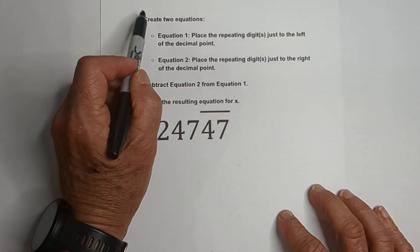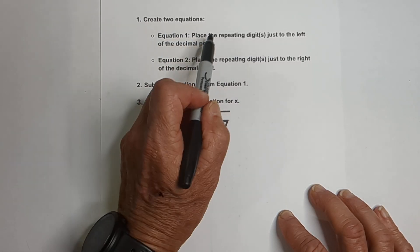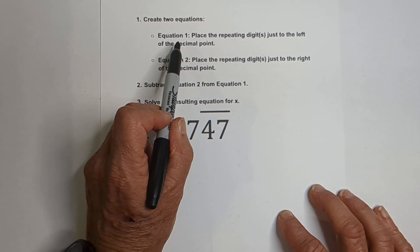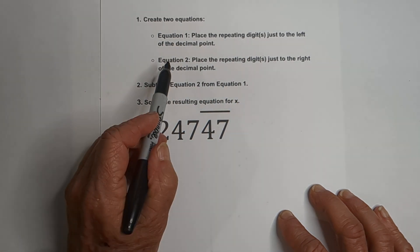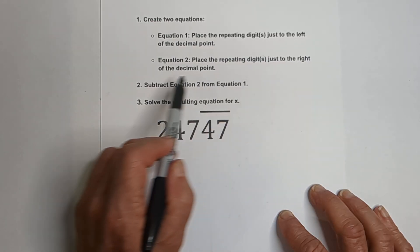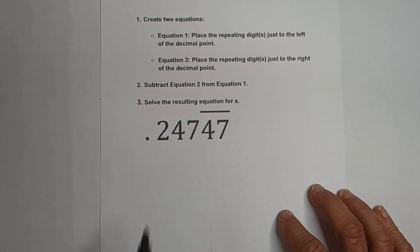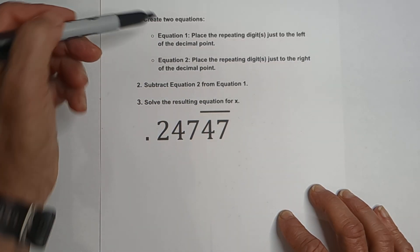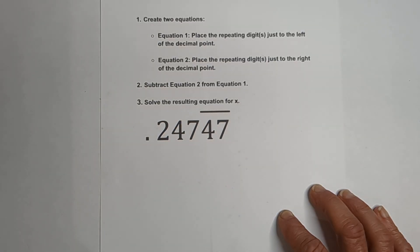What we're going to do is create two equations. Equation 1, we're going to place the repeating digit just to the left of the decimal point. Equation 2, we're going to place it just to the right of the decimal point. We're going to subtract equation 2 from equation 1, and then we're going to solve for x.